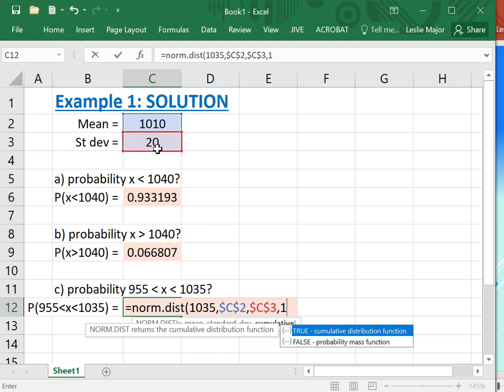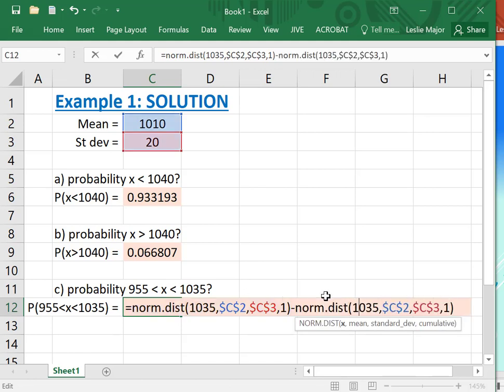So do the norm.dist to the 1035 first, and what I like to do is I just copy, Ctrl+C, Ctrl+V that, and then just change the second value to 955. And then here we are.